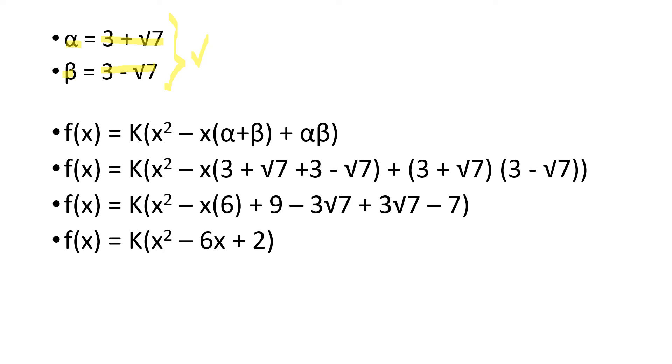Now we are going to insert these values in the equation we found in the last slide. So f of x equals k multiplied by x square minus x multiplied by 3 plus root 7 plus 3 minus root 7, plus 3 plus root 7 multiplied by 3 minus root 7.